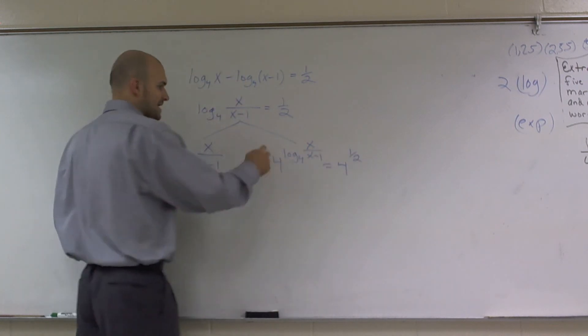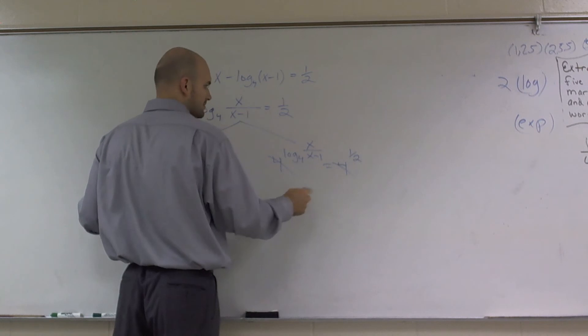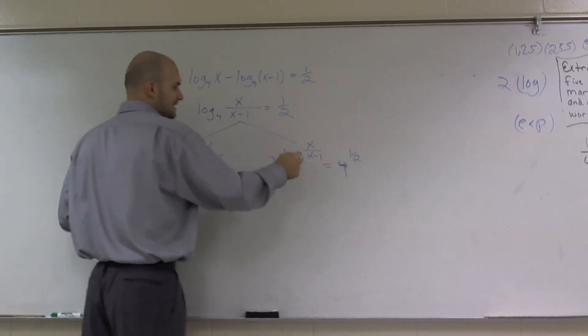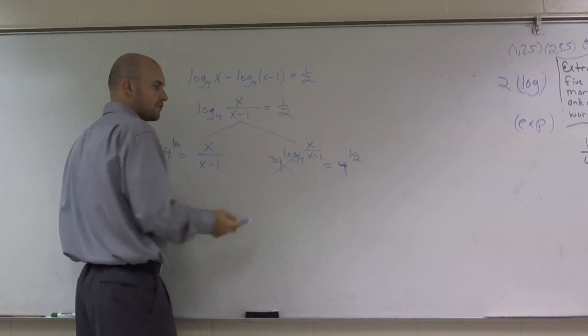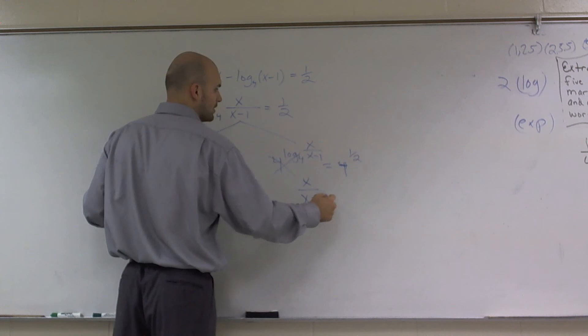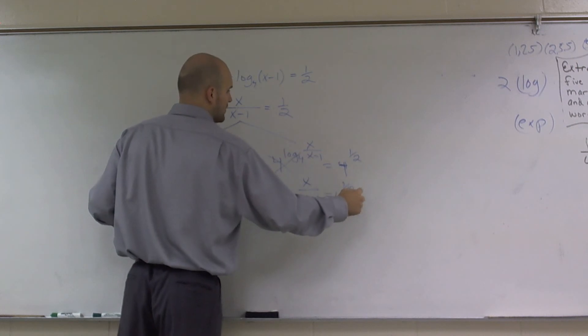Now, since they're at the same base, I can cancel them out. I'm sorry, I don't cancel that out. Now, these 4 raised to log base 4 will cancel out. So I'm just left with x over x minus 1 equals 4 to the 1 half power.